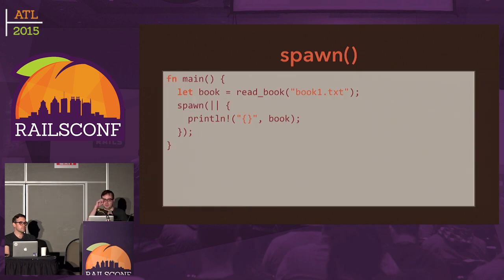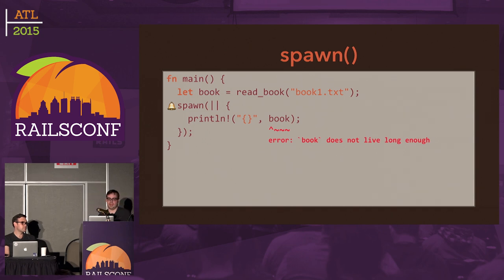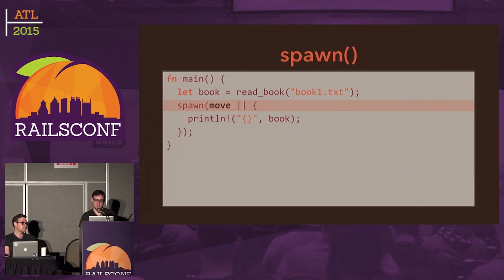A couple of simple examples here. We have the spawn function which takes a closure. If we call spawn and try to access a book from the outside, it's going to tell us that the book doesn't live long enough. The reason is that the closure can run at any time in the future, but we know the main function owns the book, and as soon as main exits, it's going to clear the book. So that's a compile-time error. If we add the word 'move' to it, that basically says this closure is going to move everything from the outer scope inside of it — and that becomes a regular transfer of ownership into the closure.